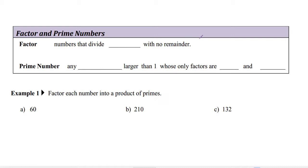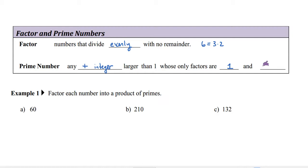Let's start with factoring and prime numbers. A factor is a number that divides evenly with no remainder. For example, the number 6 can be written as 3 times 2, so both 3 and 2 are factors of 6. A prime number is a positive integer larger than 1 whose only factors are 1 and itself. The smallest prime is 2. Three is also prime; 4 is not prime because you can write it as 2 times 2. Five is prime, 6 is not, 7 is prime, and so on.